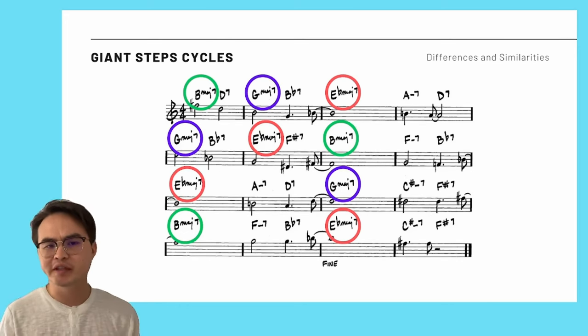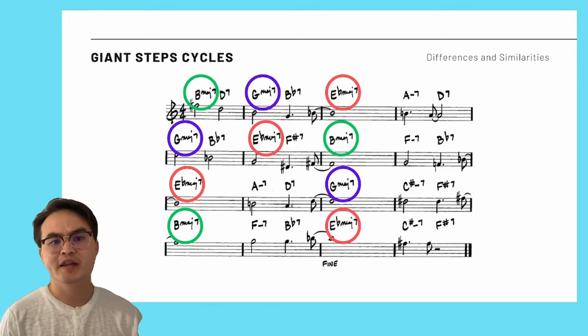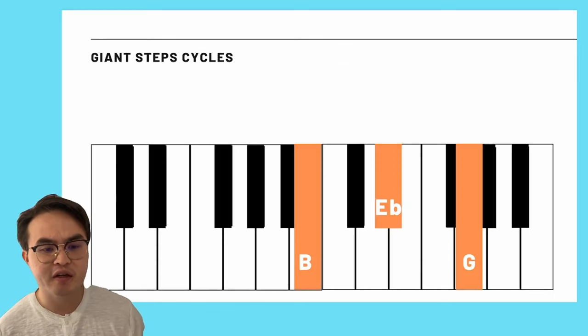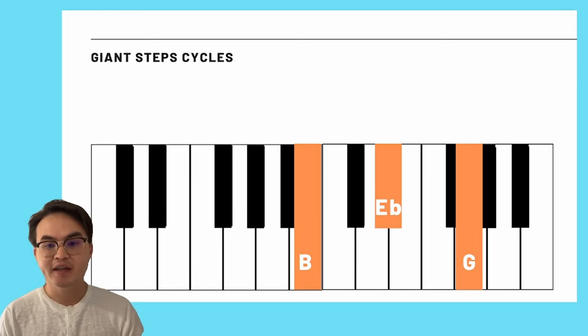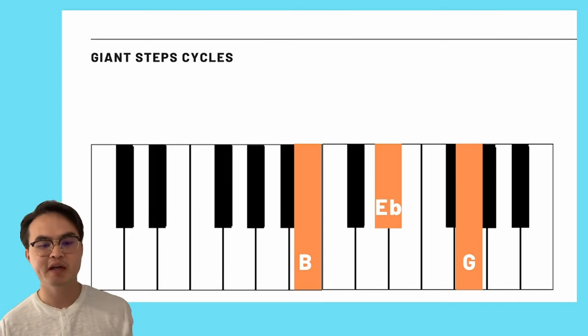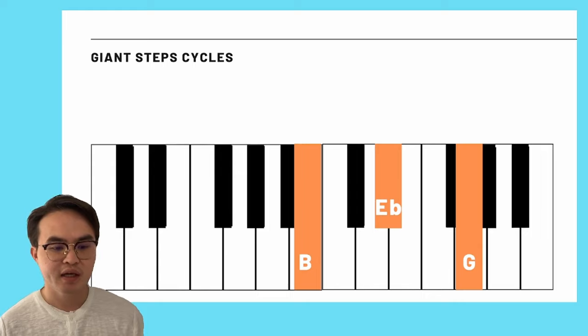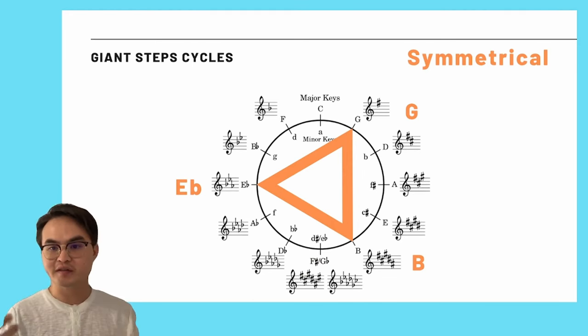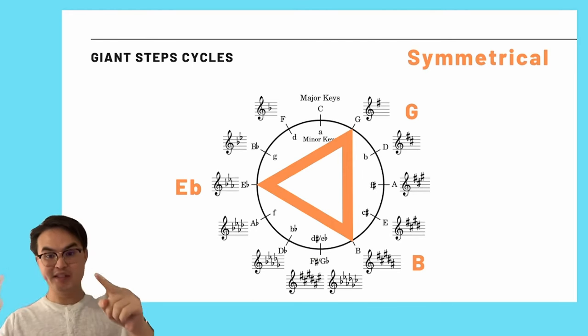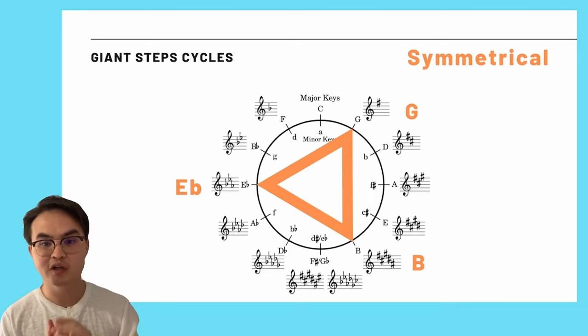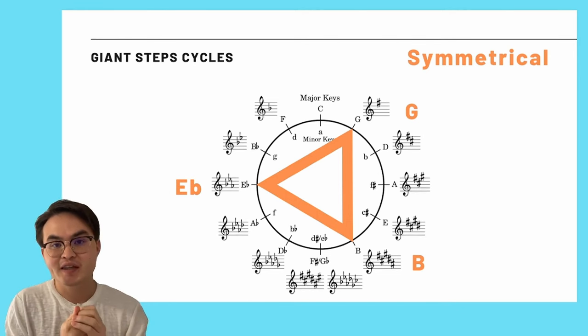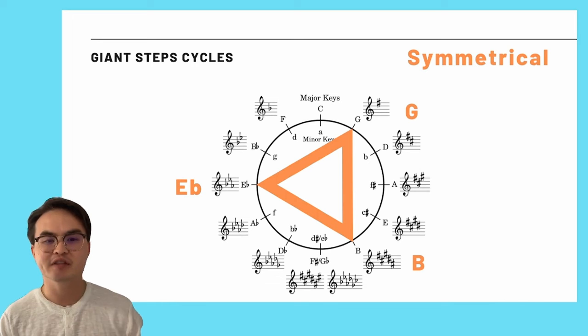And this isn't unusual in itself. We have a lot of pieces of music in the world that share between different keys. But these keys in particular are interesting in their relationship to each other. B, G, and E flat, they are equidistant on a keyboard. They are harmonically each four semitones from one another. And if you take that relationship and you map it onto the circle of fifths, it creates a kind of equilateral triangle, a symmetrical harmonic structure. And it's this mathematical peculiarity that really defines the harmonic identity of Giant Steps.